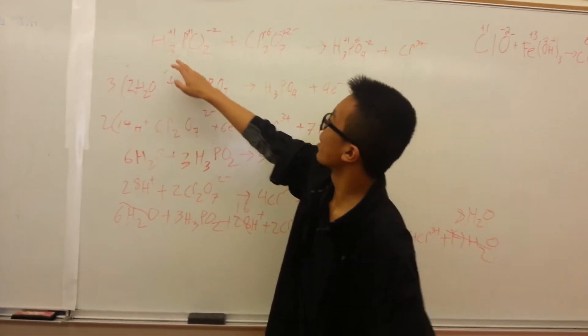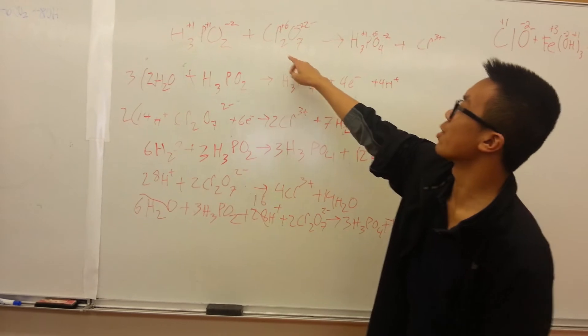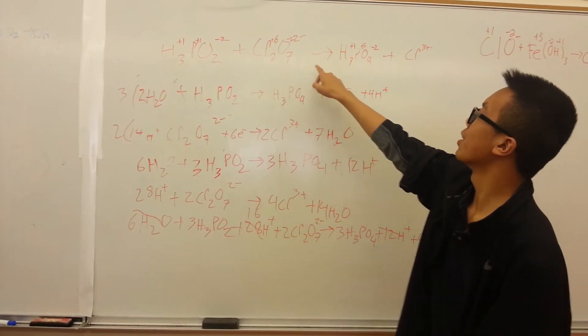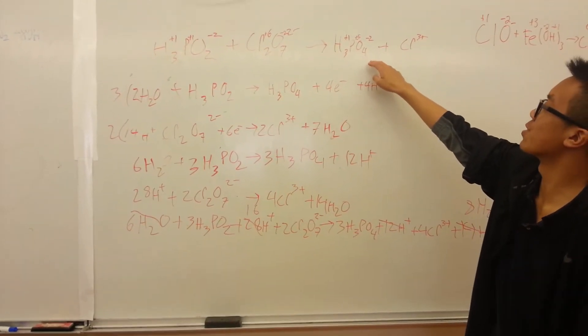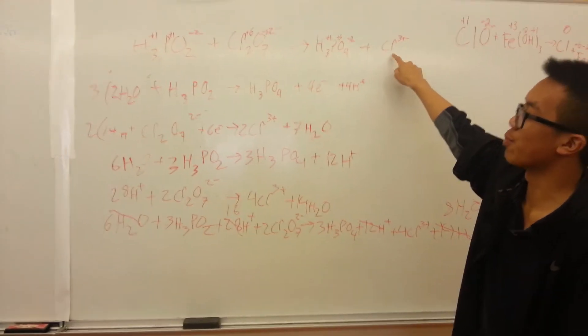Okay, so our equation is H3PO2 plus CR2O7 2- and it goes to H3PO4 plus CR3+.